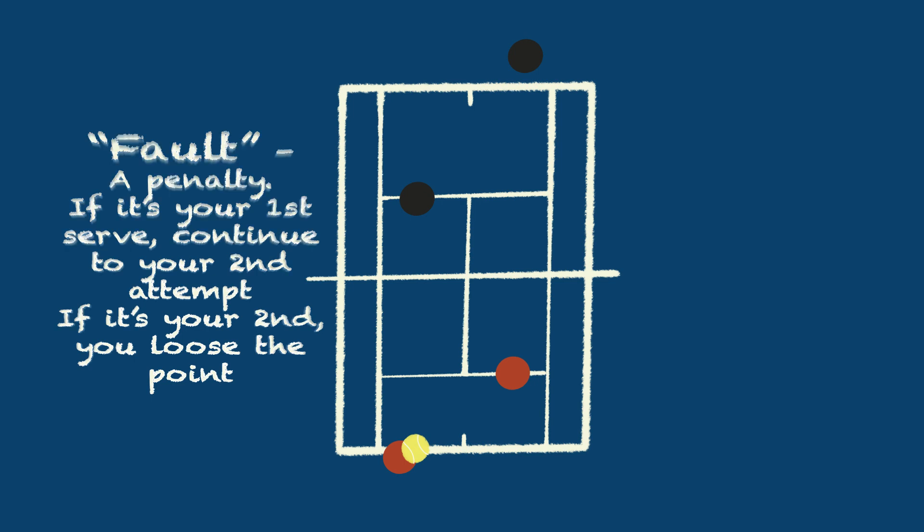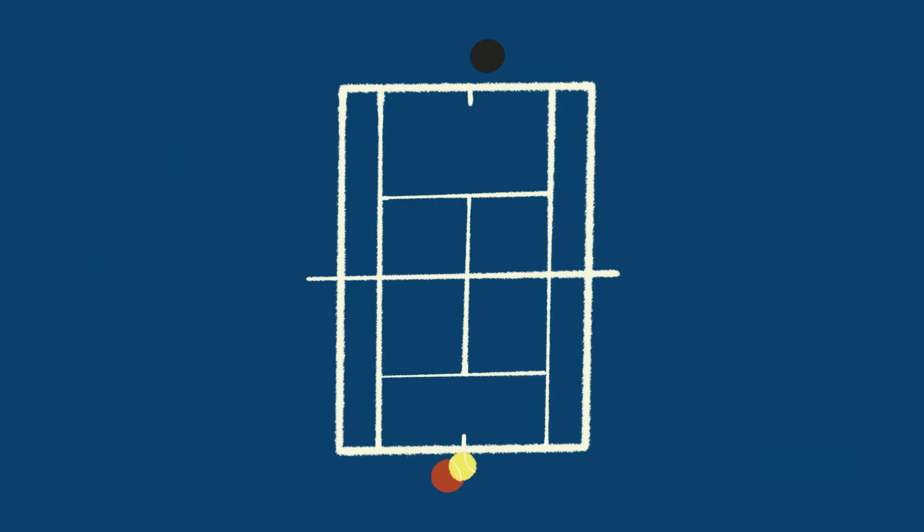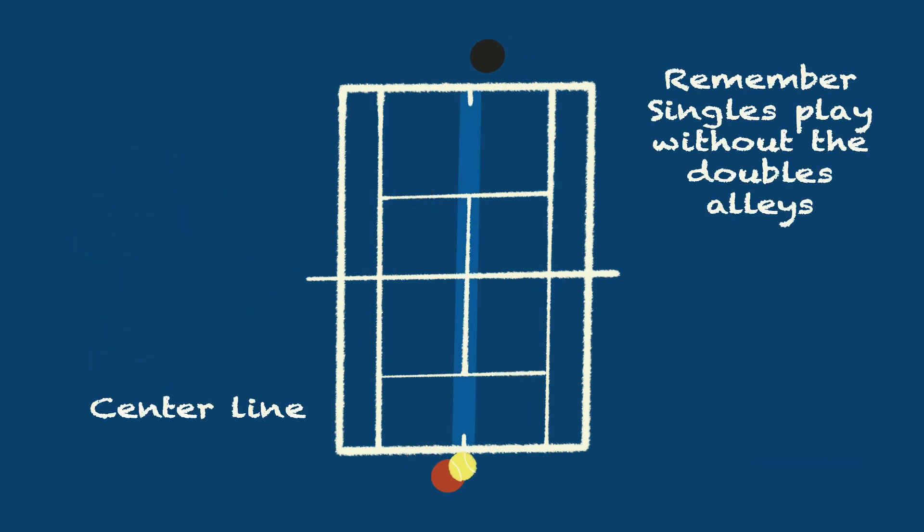In doubles, you serve in the corner near the single sideline. In singles, you typically serve next to the center line, since you will be in control of the whole court.